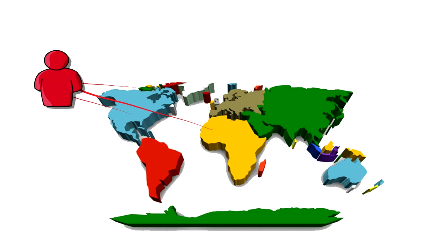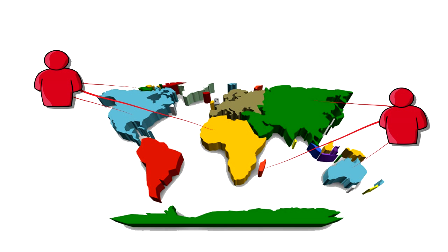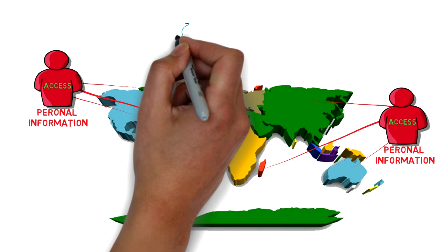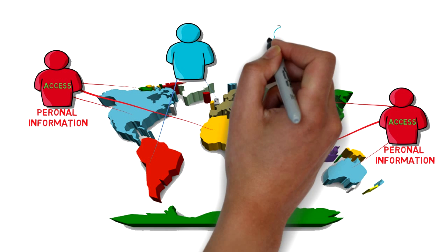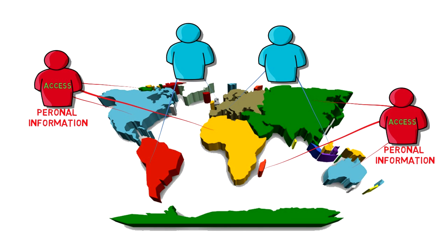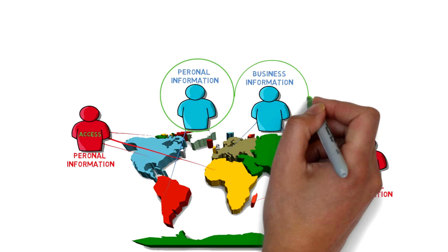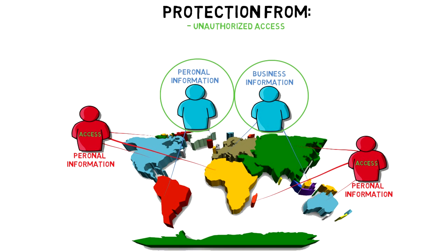For example, in some countries data refers to personal information of their citizens, and the word protection refers to authorized access to personal information, while in other countries data refers to any information whether personal or business, which requires protection from unauthorized access, changes, or destruction.